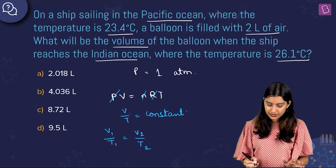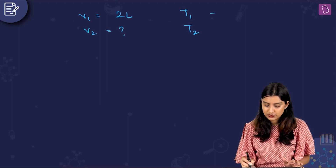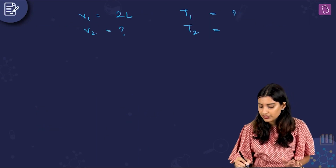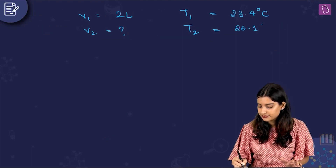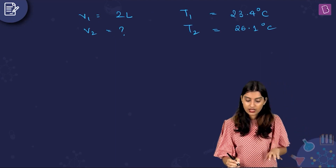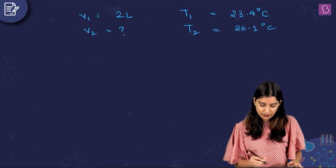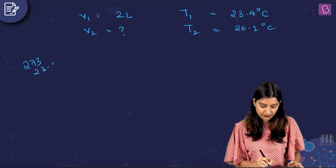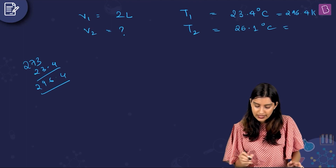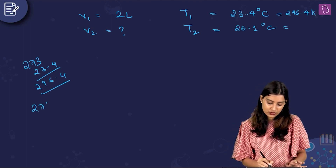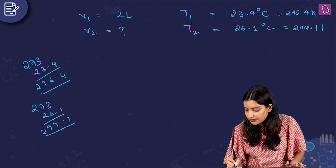So we get V1/T1 = V2/T2. V1 is given as 2 liters, and we need to find V2. T1 is 23.4 degrees Celsius and T2 is 26.1 degrees Celsius. Converting to Kelvin: T1 = 273 + 23.4 = 296.4 K, and T2 = 273 + 26.1 = 299.1 K.